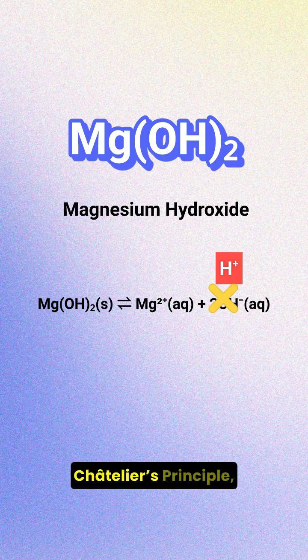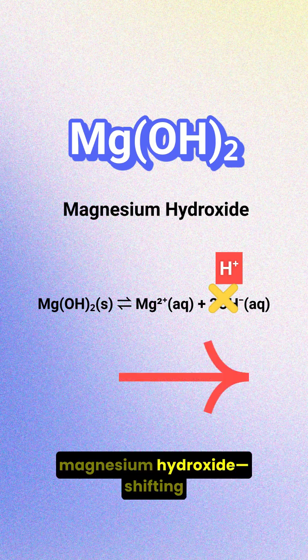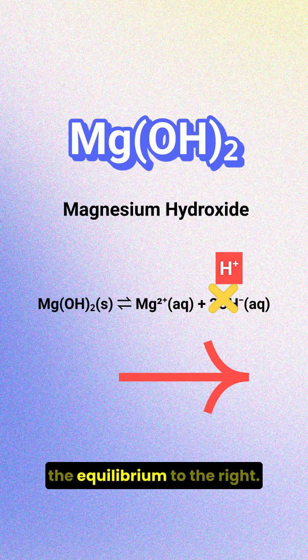Now, according to Le Chatelier's principle, the system tries to replace those ions by dissolving more magnesium hydroxide, shifting the equilibrium to the right.